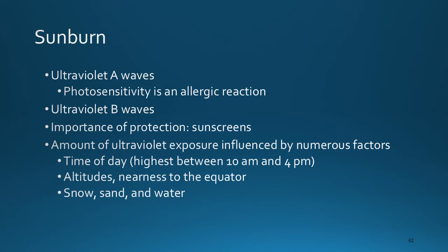Ultraviolet A waves are the longest and cause only minimum burning, but play a significant role in photosensitive and photoallergic reactions. They are also responsible for premature aging of the skin and potentiate the effect of ultraviolet B waves. Ultraviolet B waves are shorter and responsible for tanning, burning, and most harmful effects attributed to sunlight, especially skin cancer. It is important to protect the skin through use of sunscreen. The amount of UV exposure is influenced by the time of day — highest between 10 a.m. and 4 p.m. — higher altitude, nearness to the equator, and reflection off snow, sand, and water.